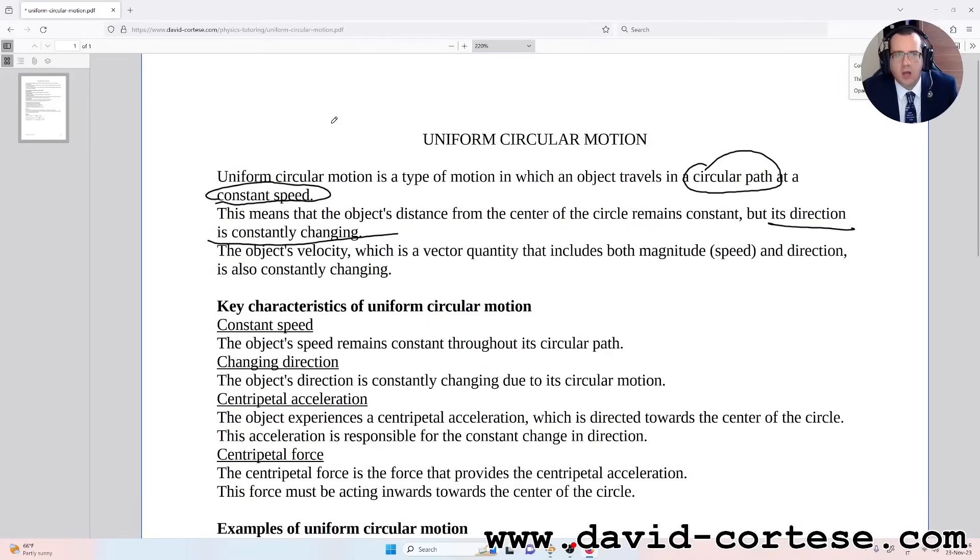The object's velocity, which is a vector quantity that includes both magnitude (speed) and direction, is also constantly changing. The velocity is a vector quantity. The magnitude is the speed, and there is also the direction that constantly changes.